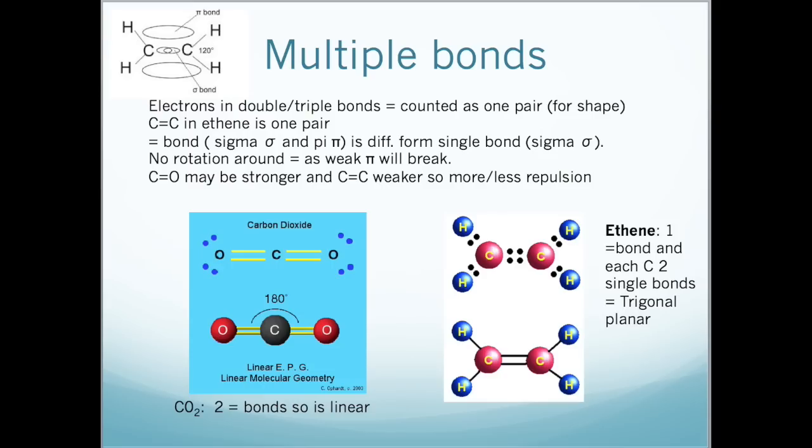Let's look at situations when there are multiple bonds. Electrons in double or triple bonds count as one pair for the purposes of determining the shape of the molecule. So for example, the carbon-carbon double bond in ethene counts as one pair, and the triple bond in ethyne also counts as one pair. The carbon-carbon double bond has a sigma and a pi bond as shown here.